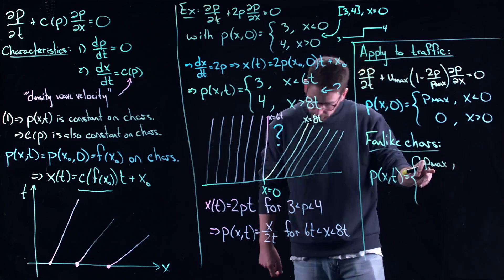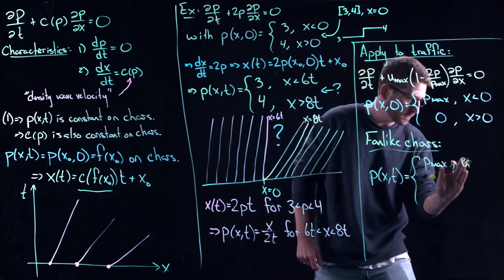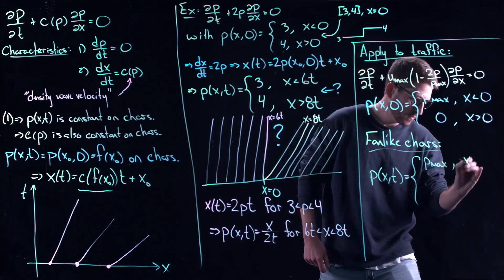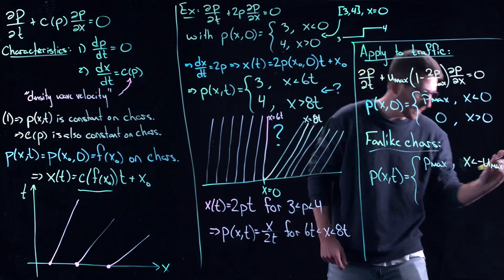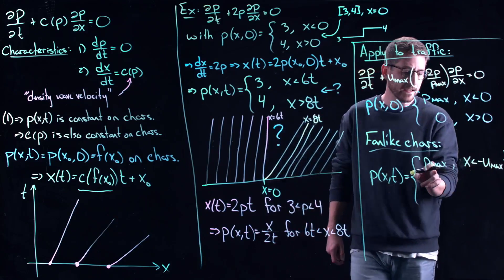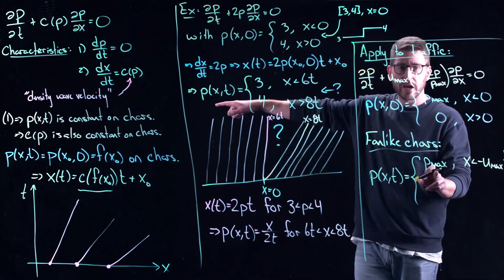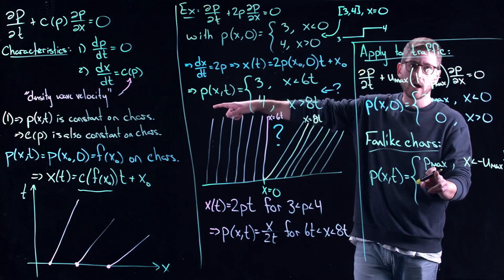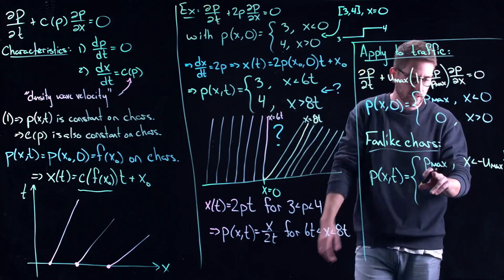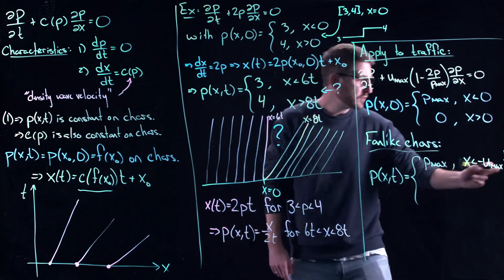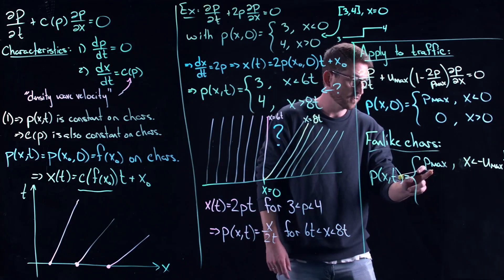So it's going to be full density for x less than -uₘₐₓt. So this is the delay, this is the delay time that it's waiting to get way back. Imagine this is a long line at a red light. You can also think of this as a train that went by that slowed people down. So these are the people who are still waiting to be able to move after the light turned green.